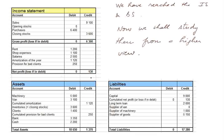Here is the income statement that records operations and profit generation over a whole accounting period. And here is the balance sheet at the end of the accounting period.